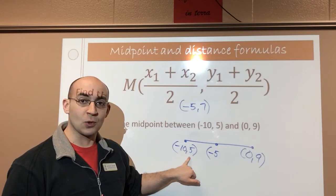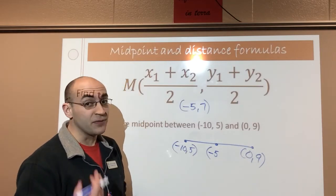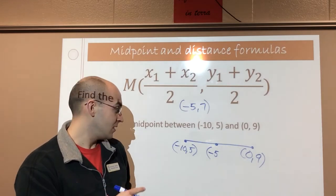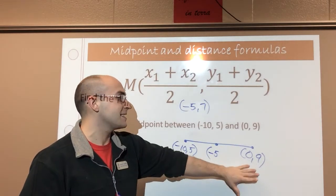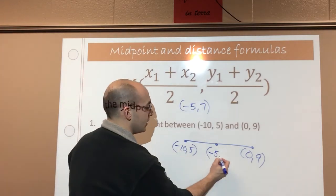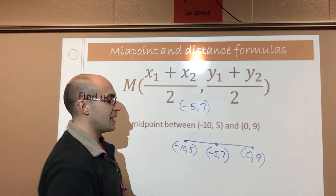I'm going to do the same thing with the y values. 5 to 9, that's 4 units. So half of that is 2. Don't write 2, though. It doesn't go anywhere near 2. So it's going to be 5 plus 2, which gives me 7. So the point here is 7, just like we had before.